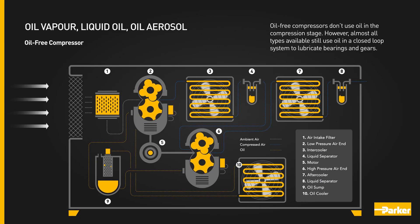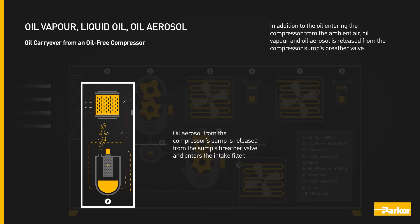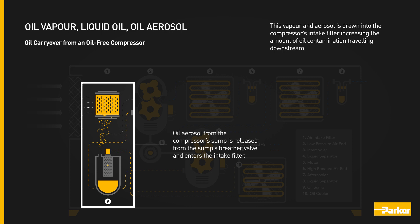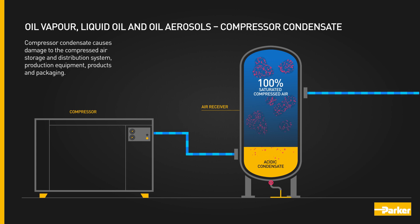Oil-free compressors don't use oil in the compression stage. However, almost all types available still use oil in a closed-loop system to lubricate bearings and gears. In addition to the oil entering the compressor from the ambient air, oil vapour and oil aerosol is released from the compressor sump's breather valve. This vapour and aerosol is drawn into the compressor's intake filter, increasing the amount of oil contamination travelling downstream. Oil aerosol and liquid oil mix with water in the system to form acidic condensate, causing damage to the compressed air storage and distribution system, production equipment, products and packaging.